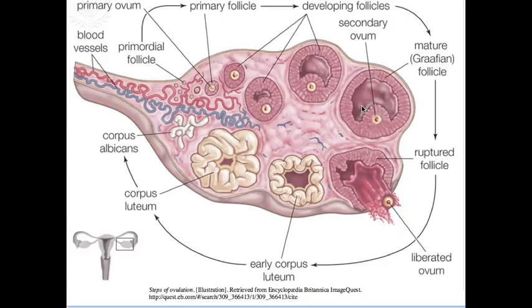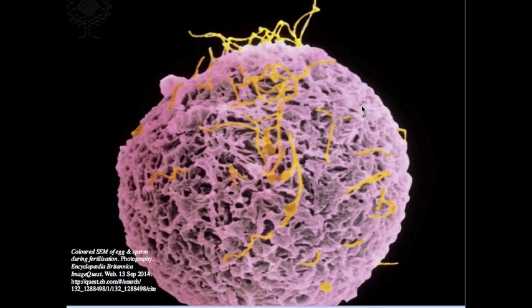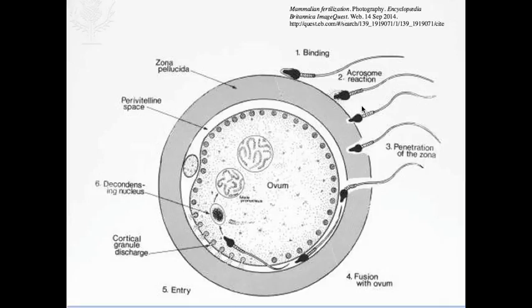By the time the egg is shed in ovulation, meiosis two is in progress but it remains suspended at metaphase, and will only complete the remaining divisions if fertilization occurs. Now we're ready to look at how it all comes together — fertilization, the miracle of life. For an excellent animation of this process, I would like to hand you over to the good people at Nucleus Medical Media, and to view this animation you can click right here.